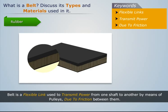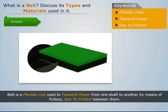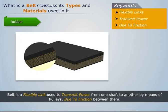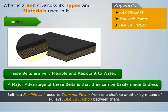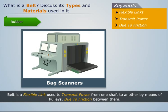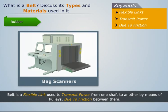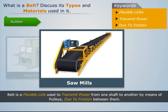Rubber: Belts made of rubber have layers of fabric fused with rubber, so that the fabric layer is sandwiched between two thin layers of rubber on its surfaces. These belts are very flexible and resistant to water. A major advantage is that they can be easily made endless. They are commonly used in bag scanners in airports and metros, and in saw mills.